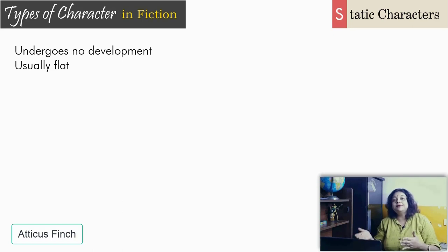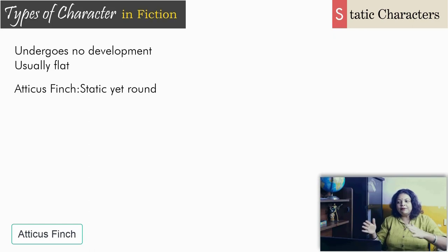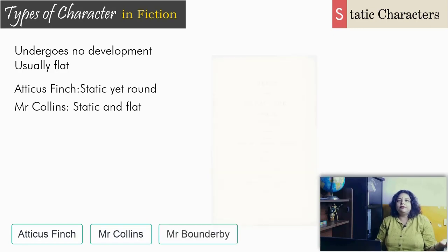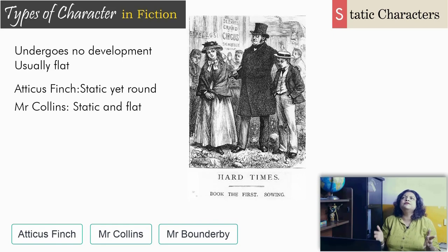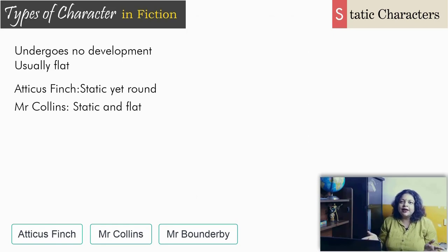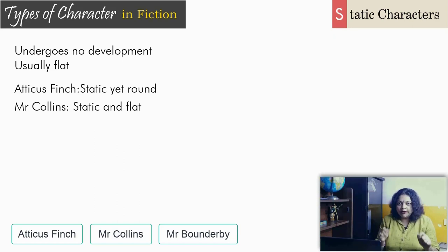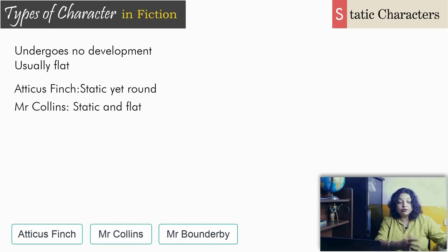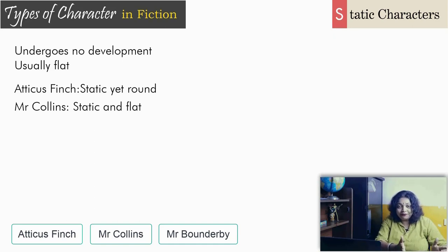A static flat character is easy to identify — most flat characters are static. Mr. Collins in Pride and Prejudice: static and flat. Mr. Bounderby in Hard Times: static and flat, doesn't change. In Hard Times there are so many flat and static characters that when we encounter a round character like Sissy Jupe, we stare in amazement — and that's the whole point. Dickens is telling us this is the only real human being in the novel, and how Louisa moves toward becoming a round character through change is the whole point of Hard Times.